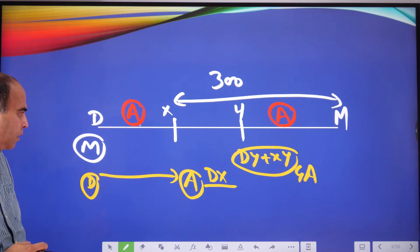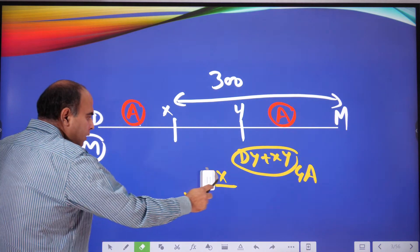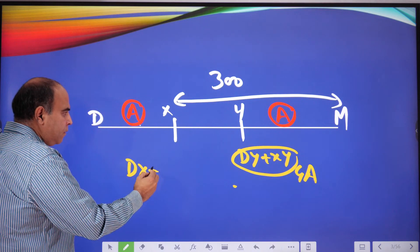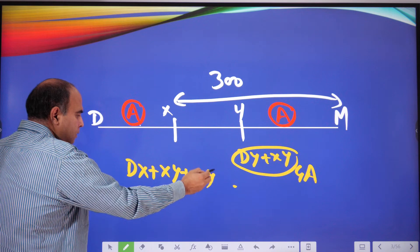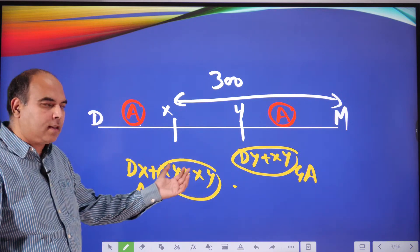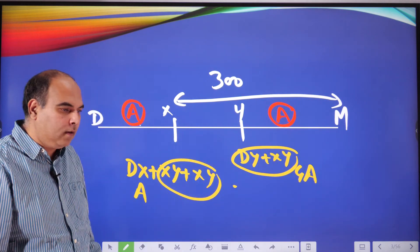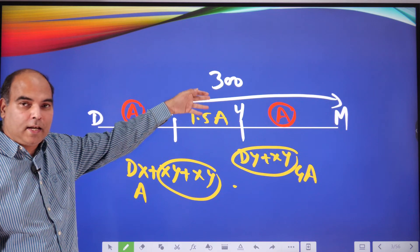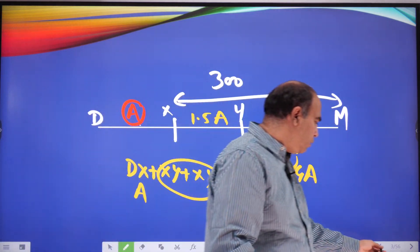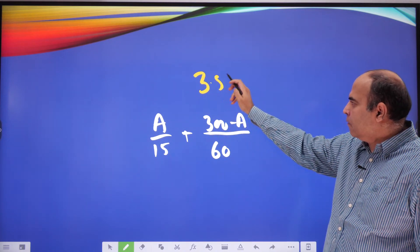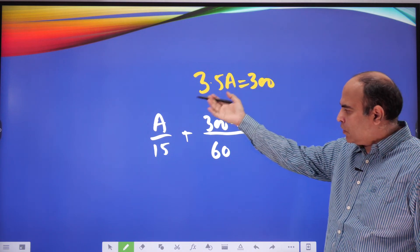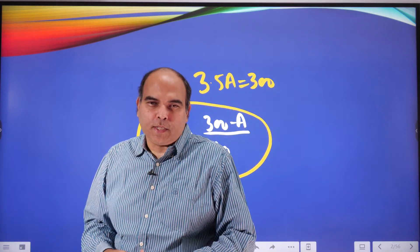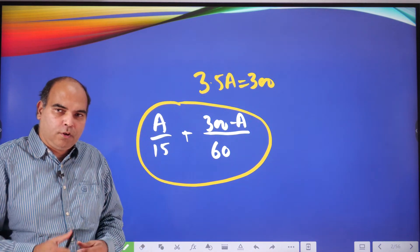So this is another key switch in this problem. Once you get that DY + XY is 4A, the next step you can do is DY + XY is nothing but DX + XY + XY and DX is A. So 2XY is 3A. So the distance XY will be 1.5A. And once you can get XY is 1.5A, you know that the total journey is 3.5A and 3.5A is 300. So from there, from that equation, 3.5A = 300, you can use the value of A to substitute in this calculation. And if you can calculate that, you will get 9 2/7 as the answer for the number of hours. I'll leave the calculation to you.